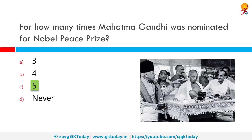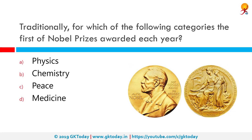Traditionally, for which of the following categories are the first Nobel Prizes awarded each year? Correct answer is Medicine. The Nobel Prize in Physiology or Medicine, administered by the Nobel Foundation, is awarded yearly for outstanding discoveries in the fields of life sciences and medicine. It is one of the five Nobel Prizes established in the will of Swedish chemist Alfred Nobel, the inventor of dynamite, in 1895.